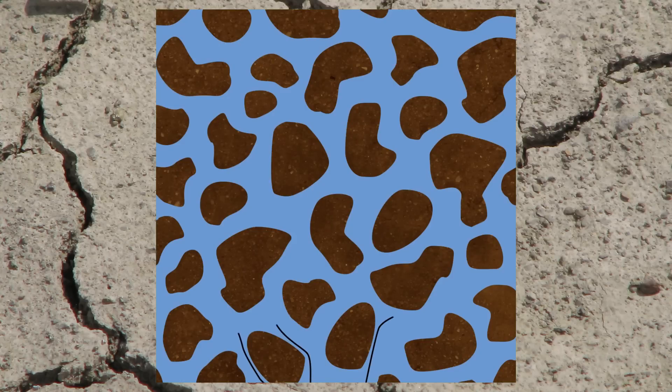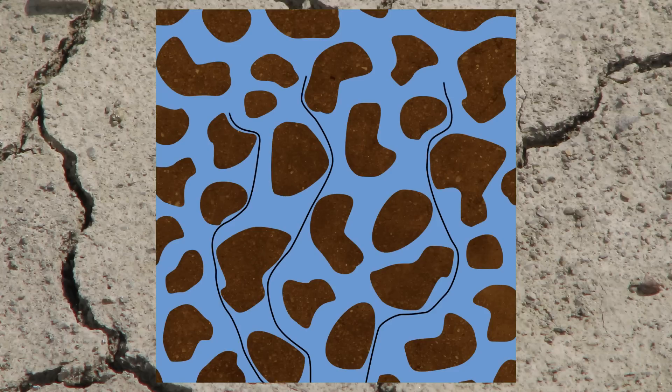But when there are soil particles present like there were in the saturated sample that we measured, the soil particles actually get in the way of the flow of the current and the current has to go around. So the path of current flow is longer.